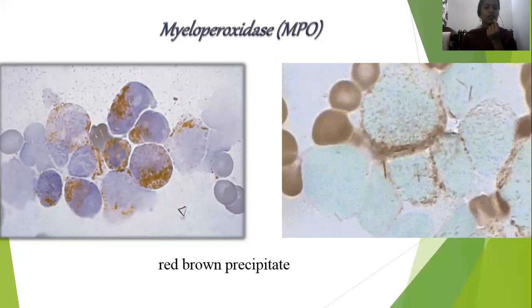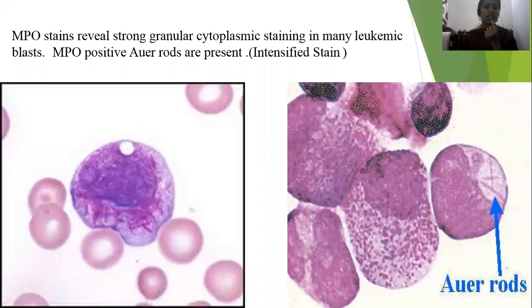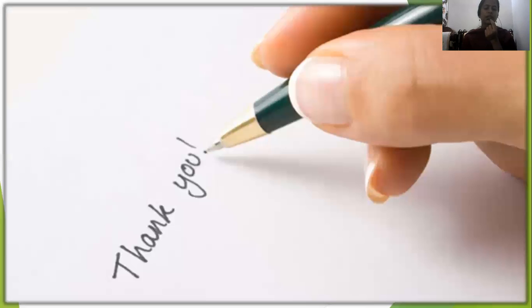This picture shows reddish-brown granules present in MPO-positive cells. Another picture shows the presence of Auer rods appearing as reddish-pink rod-like structures in the cytoplasm of the hematopoietic cell. That concludes today's topic. Thank you for watching and listening.